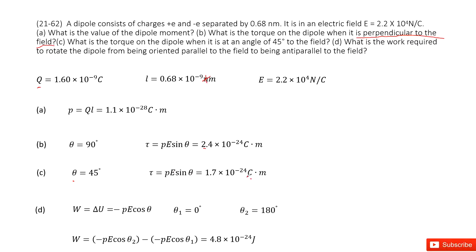The next one asks you the work required to rotate the dipole from being oriented parallel to antiparallel to the field. So now we first write down the work done by the dipole. The work done by the dipole, you can see it is negative pE cosine theta. This is also in our textbook, you can copy it. And then at initial, the angle is parallel to the field, so theta 1 is 0. Then it rotates to antiparallel to the field, so theta 2 is 180 degrees. Input all the known quantities, get the answer there.